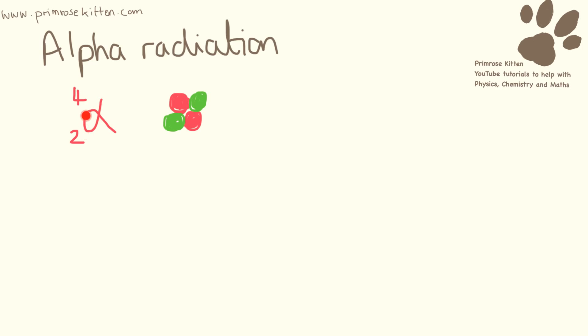Alpha radiation has this symbol here for alpha. It has a mass of four and an atomic number of two. That means it has two neutrons, two protons. Add the weight of those together and you get four. The two refers to the number of protons.